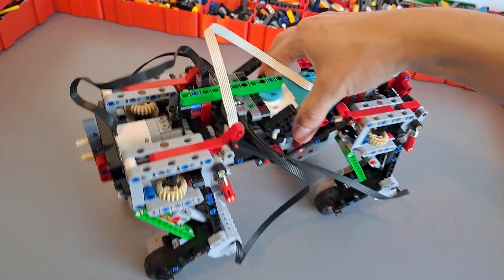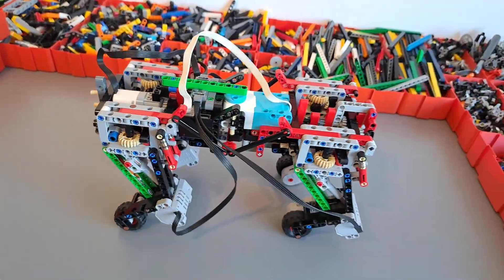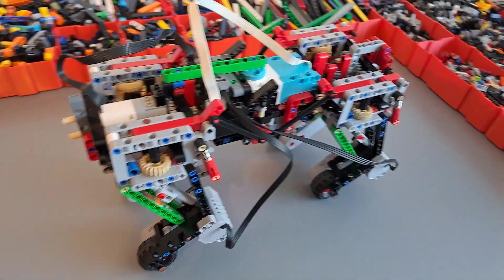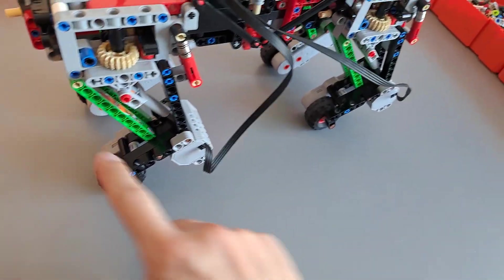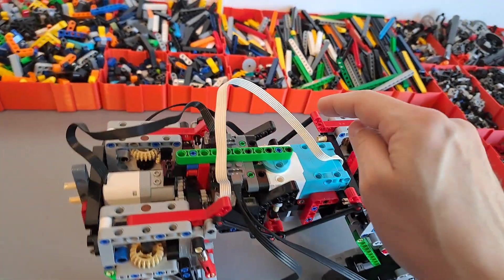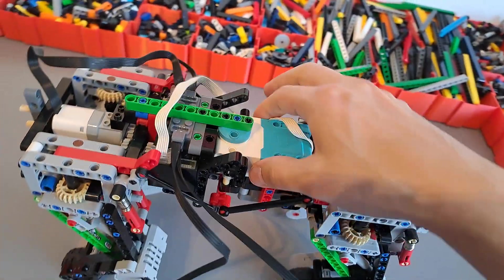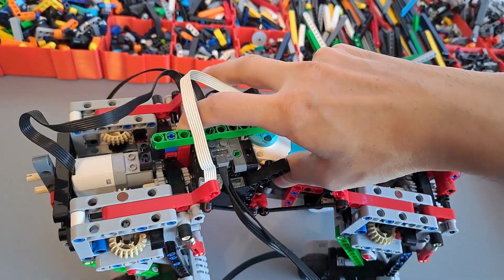And here is the very first prototype. So the basic idea is as following. We have four motors that are driving the four wheels. Then we have the fifth angular motor here which does the articulated steering.